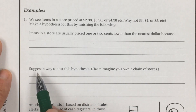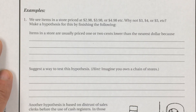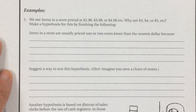Number two: suggest a way to test this hypothesis. How would you test whether people are more likely to buy something at $3.98 than at $4? I think the easiest way would be to have one store that sold the same item at different prices — sell it at $4 for two weeks, then the next week sell it at $3.98 and see which one had the higher sales. Or use two identical stores in the same city: one sells at $4, the other at $3.98, then compare the sales.